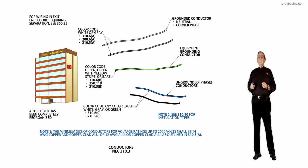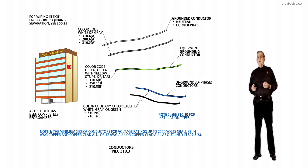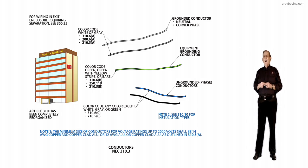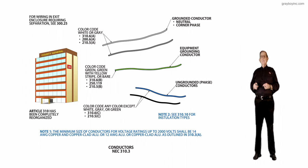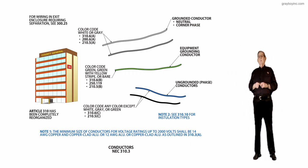First I would like to review the ungrounded phase conductors. What color could they be? Well they could be any color except white, gray or green as required in 310.6C and 210.5C, depending if you're a feeder or a branch circuit.